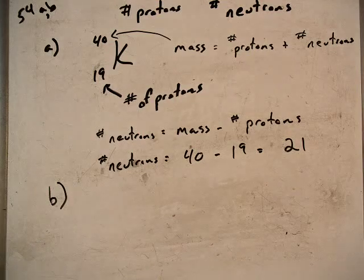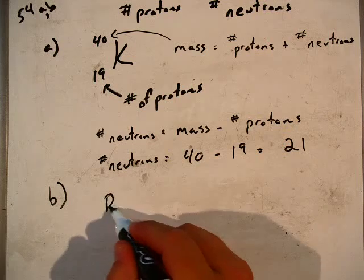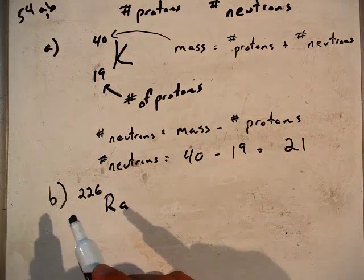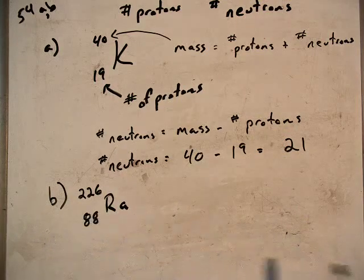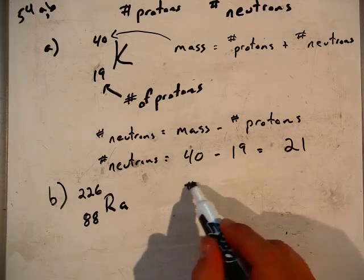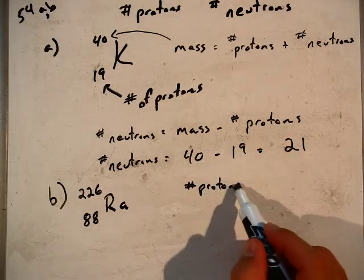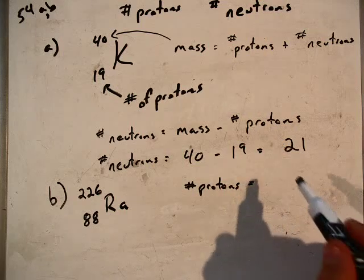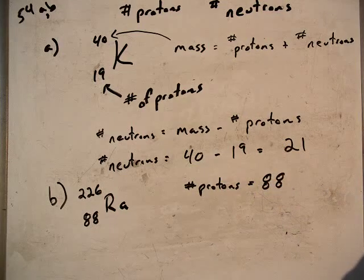I'll be a little bit faster with part B. Part B looks at radium. Its symbol is Ra. It has a mass of 226 and it has an atomic number of 88. So again, that bottom number is always the number of protons. It's also the atomic number for the element, and so we have 88 protons in radium.